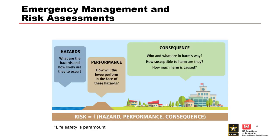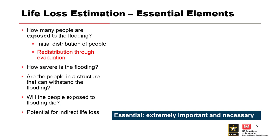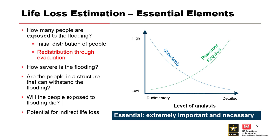You've seen this risk-informed framework: infrastructure, hazard, performance, consequences — we live over in consequences. Life loss essential elements: initial distribution of population, then we redistribute that group — how many people are exposed to flooding? So we have that initial distribution, then redistribution through evacuation. That's really what we're going to focus on here, along with severity of flooding, stability, whether people will die based on where they're exposed, and potential for indirect life loss. Right now we're focusing on how we can work with emergency managers to improve what that redistribution looks like.